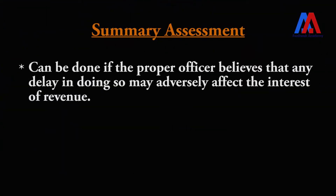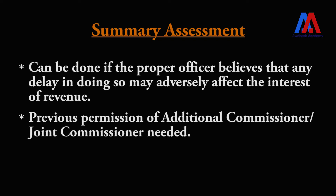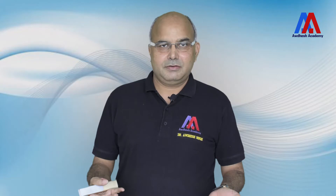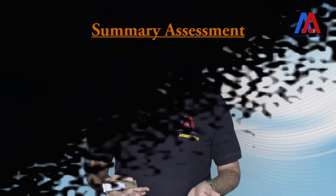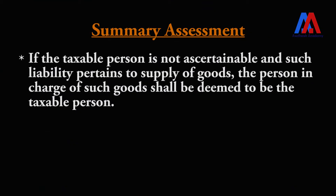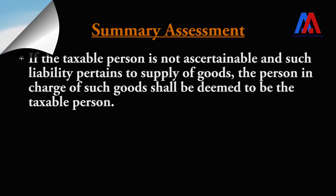Summary assessment can be done when the proper officer believes that any delay in doing so may adversely affect the interest of the revenue. Summary assessment is done with the previous permission of the Additional or Joint Commissioner of GST. If you do not do the assessment right now, revenue may be lost, and we cannot wait for the due process before the assessment. The provision also says that if the taxable person is not ascertainable and the liability pertains to the supply of goods, the person in charge of such goods shall be deemed to be the taxable person.